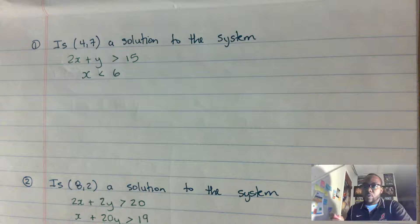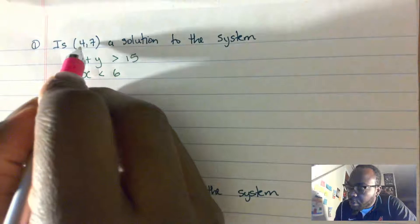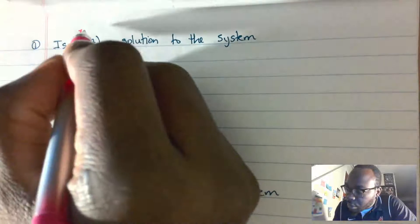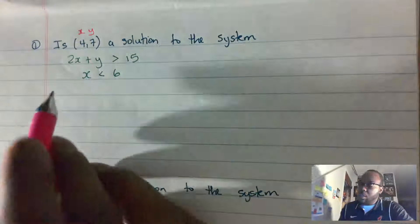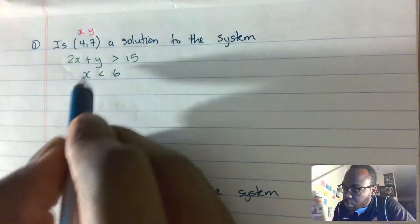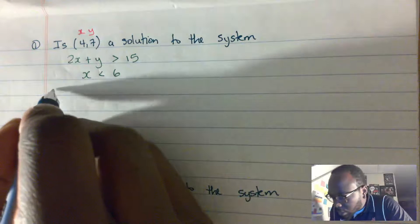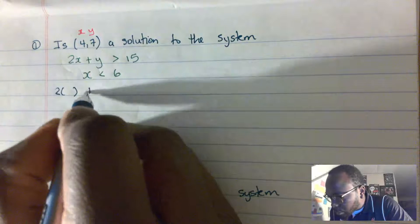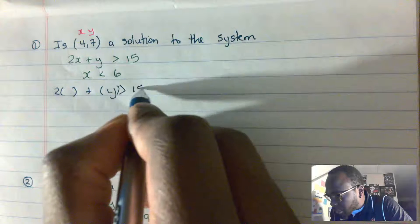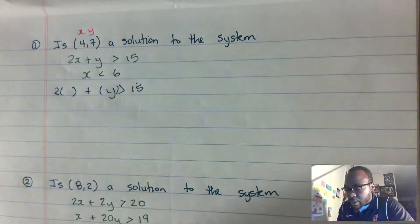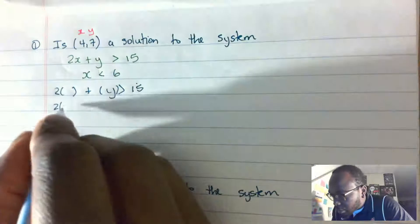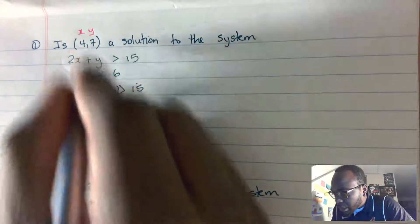We know that for the pair (4,7), 4 equals x and 7 equals y. So I'm going to check this in both equations. I'll rewrite equation 1 and equation 2. For equation 1: 2 times whatever x is, plus y, is greater than 15. So it's going to be 2 times 4 — since x is 4 — plus y.